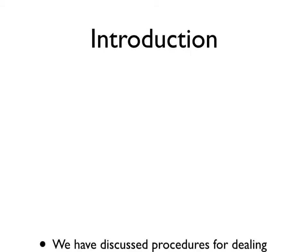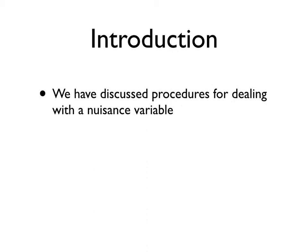Okay, so Latin squares. So we've talked about blocking on a nuisance variable, right? And repeated measures, of course, is a special case of blocking. The nuisance variable there is it's a person, but we can factor that out.